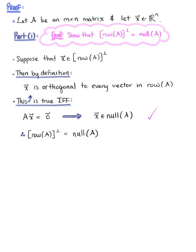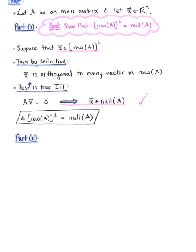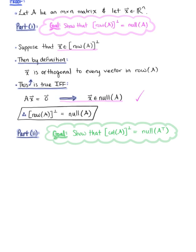We've shown that if vector X is in the orthogonal complement of the row space of matrix A, then vector X must be in the null space of matrix A, confirming equivalence. Now for part two, we want to show that the orthogonal complement of the column space of matrix A is equal to the null space of the transpose of matrix A.